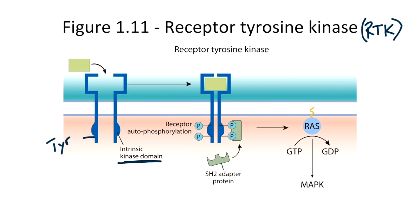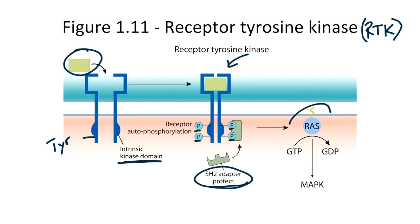When a ligand binds to an RTK, it causes neighboring RTKs to come in close proximity with one another. The RTKs can then phosphorylate the neighboring RTK. Notice that the receptor complex now has several phosphorus groups attached. In this state, the RTK can bind to another protein called an SH2 adapter protein. This complex can then activate a protein called RAS. RAS is a GTPase, which means it can convert GTP into GDP. And ultimately, RAS can activate MAP kinase, which causes further downstream cellular regulation. So remember, RTKs act on the RAS-MAP kinase pathway.